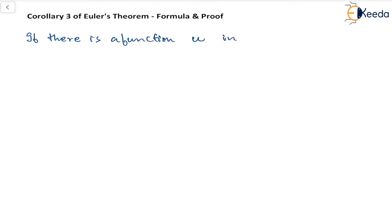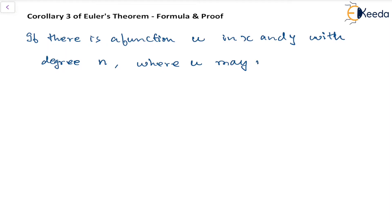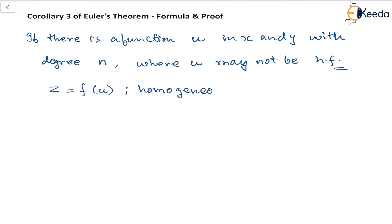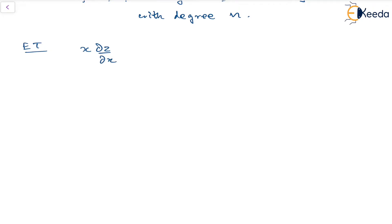So, let's say if there is a function u in x and y with degree n, where u may not be a homogeneous function, but possibly there is a function z in terms of u, which is homogeneous in x and y with degree n. Then, in that case, Euler's theorem says that x·dz/dx + y·dz/dy = n·z.